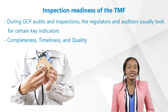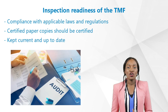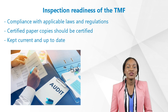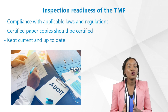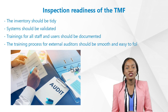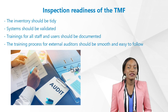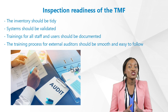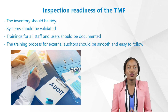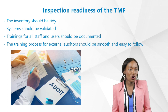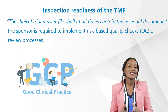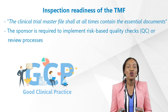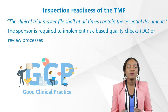Those key indicators are completeness, timeliness, and quality. Documents filed in the eTMF should demonstrate compliance with applicable laws and regulations. In case of any paper copies, these should be certified. The Trial Master File should also be kept current and up to date, the inventory should be tidy, and in case of system audits the system should be validated. Trainings for all staff and users should be documented, and the training process for external auditors should be smooth and easy to follow.